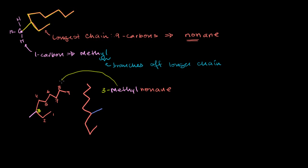This would be 3-methylnonane, because the methyl group — that one CH3 — is attached to the third carbon on our nonane backbone. For the other molecule I drew, numbering so the methyl group gets the lowest number, the methyl is on the fourth carbon, so that one is 4-methylnonane.